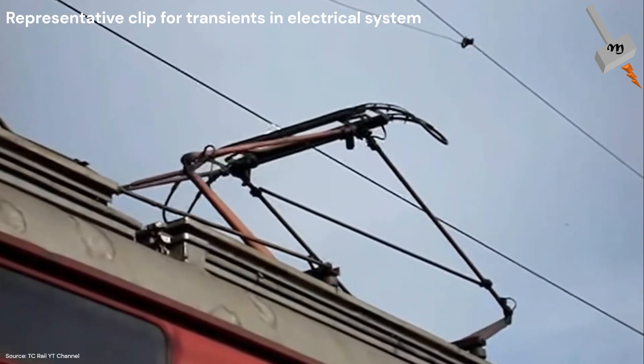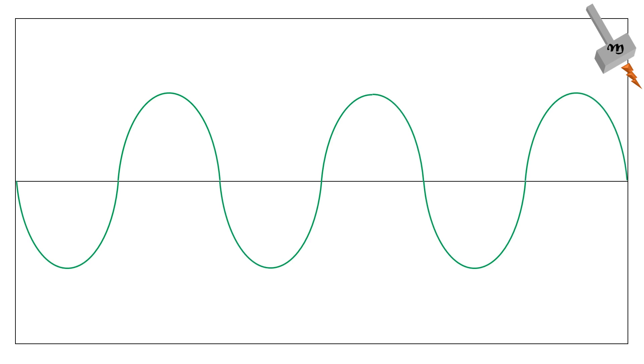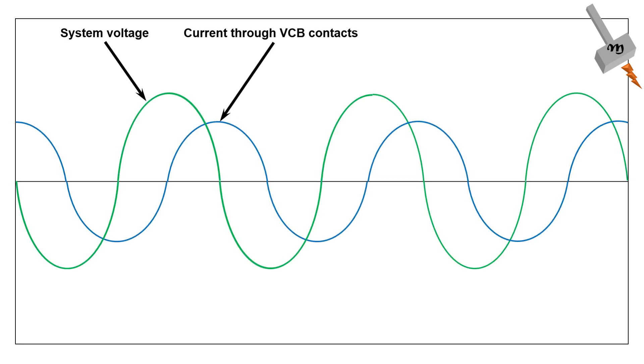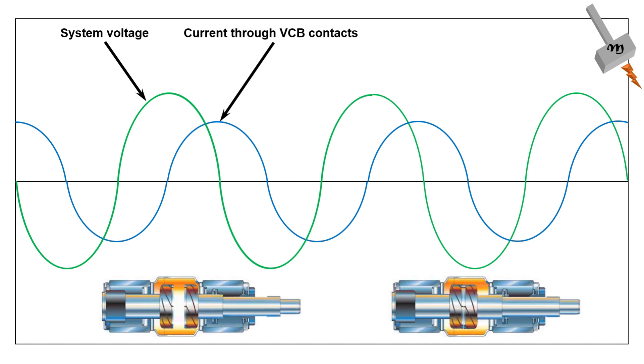First, switching operation. When a VCB is activated to interrupt the electrical current flow, it accomplishes that task with remarkable precision. However, this action involves opening and closing of the electrical circuit in a controlled manner.